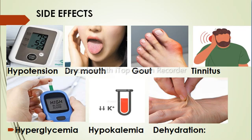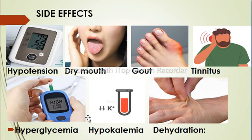Next are the side effects of furosemide or LASIX. LASIX can cause hypotension because it draws excess fluid from the body. It can also cause dry mouth due to excess urine output, and gout in the big toe. Other side effects include tinnitus or ringing ears, hyperglycemia — increased blood sugar — and hypokalemia, which is low potassium and can cause arrhythmias in the heart. Lastly, dehydration from excess fluid loss through urine.